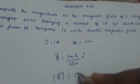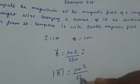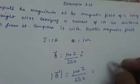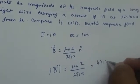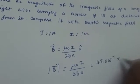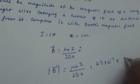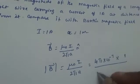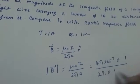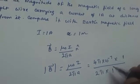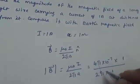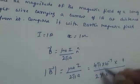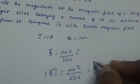Modulus of this is equal to μ₀I by 2πa. It is equal to μ₀ value is 4π×10⁻⁷ times current, which is 1 ampere, divided by 2π times a value, which is 1.